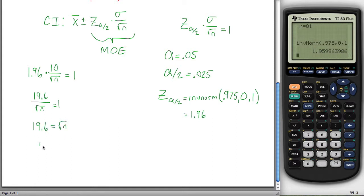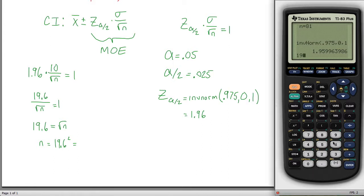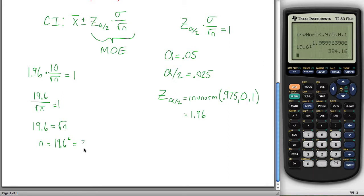And then if I square both sides of the equation, I get n is 19.6 squared, which is just under 400. So then I get my value for n would have to be 384.16. Or you can't have 384.16 people, so I guess you'd need 385 players to make sure that our margin of error is at least that small.